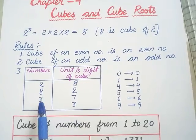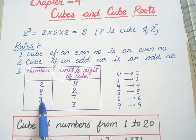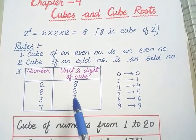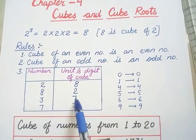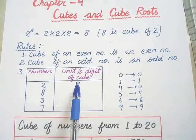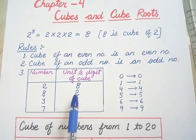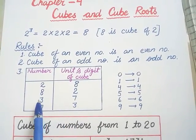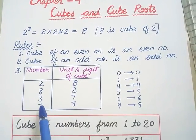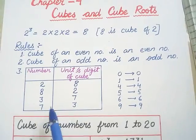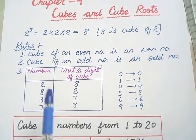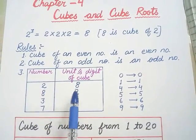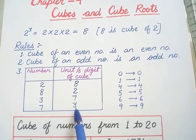Now the second rule is about unit digits. If the unit digit is 8, the cube root's unit digit is 2. You can reverse this. If it is 8, it will be 2. And if it is 7, it will be 3. That means 2 becomes 8 and 8 becomes 2, 3 becomes 7 and 7 becomes 3.